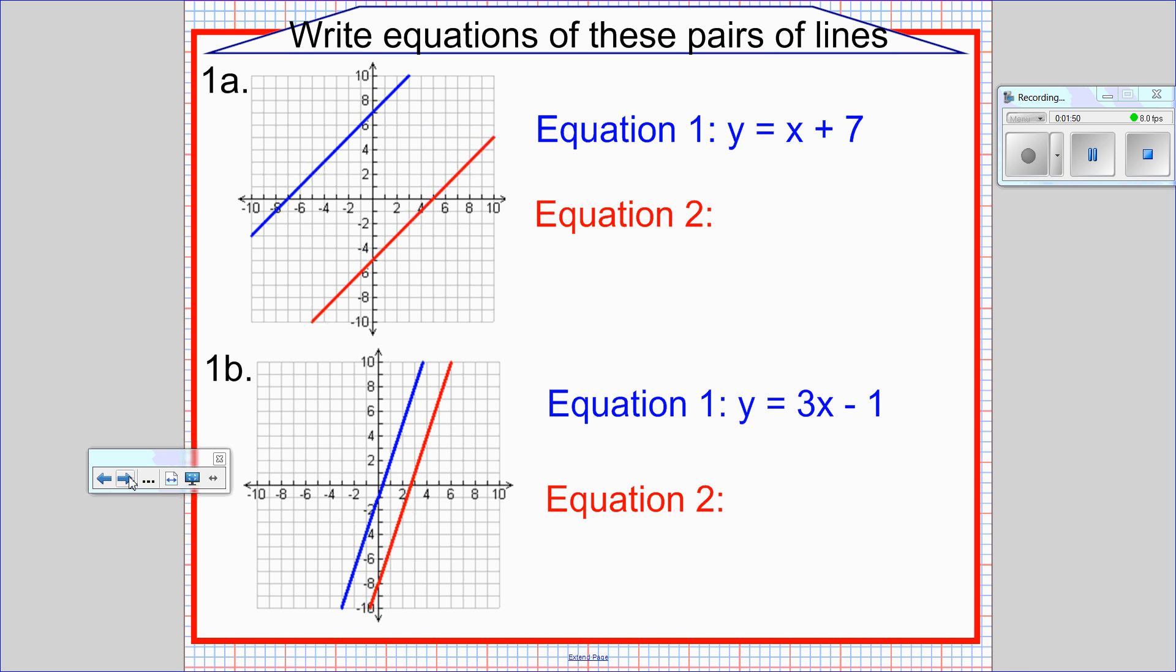A couple things here. Write equations for these pairs of lines. The blue line, y equals x plus 7. So we know the red line is going to be y equals x. And the only thing that's changing here is the y-intercept. So this one is y equals x minus 5.